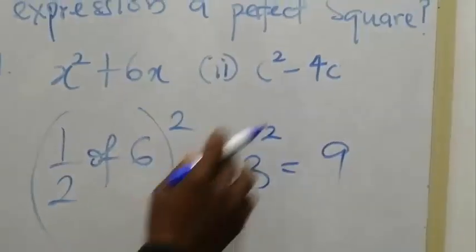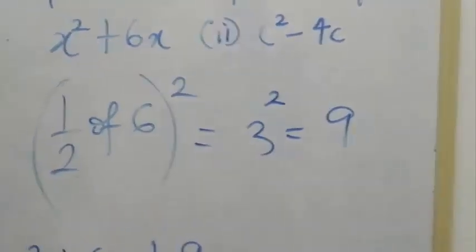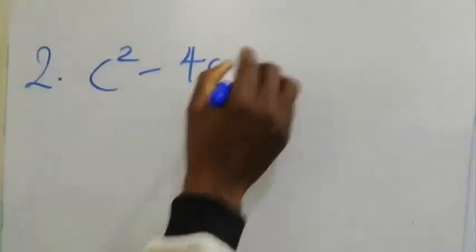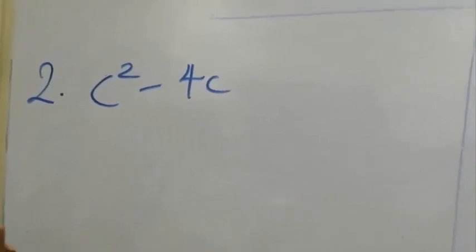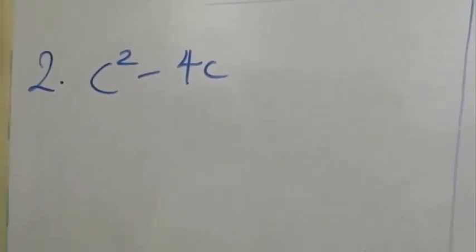C squared minus 4c. What must be added to c squared minus 4c to make the expression a perfect square?